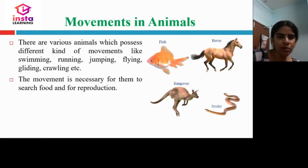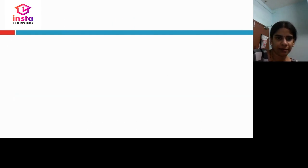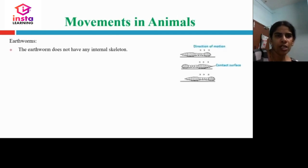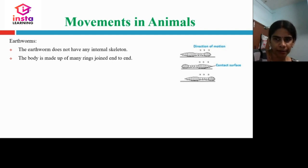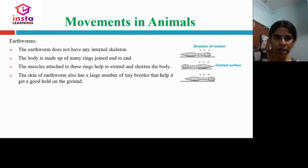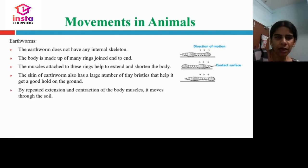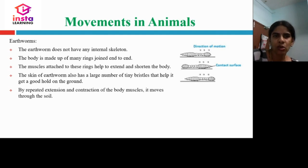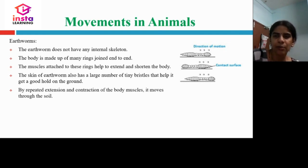Movement is necessary for animals to search for food and for reproduction. Earthworms do not have any internal skeleton. The body is made up of many rings joined end to end. The muscles attached to these rings help to extend and shorten the body. The skin of the earthworm has a large number of tiny bristles which help pull it along the ground. By repeated extension and contraction of body muscles, it moves through the soil.